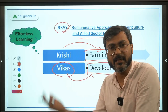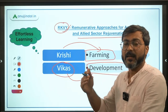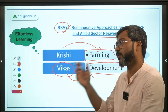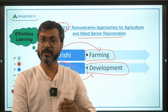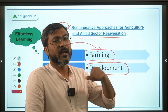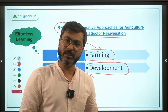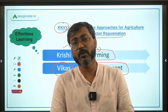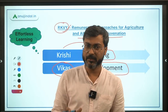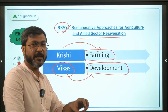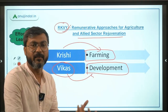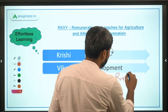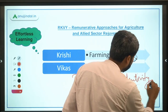Whenever we talk about agriculture, in most cases they include the allied sectors also — like animal husbandry, dairy, fishing — which means the government is focused towards the development of agriculture and allied sectors. This development can be done by enhancing production and productivity in the agriculture and allied sector — that is the first objective.